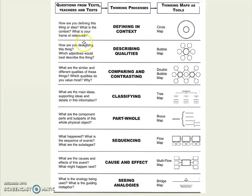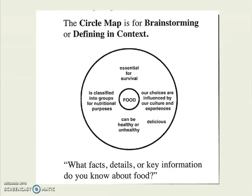So those are the eight thinking maps that we want you to put in a lesson plan. Let's go more in depth for each one. A circle map — all of these examples are going to be based around food because who can't relate to food? A circle map is all about vocabulary, prior knowledge, pre-writing, brainstorming, details of topics, and author's purpose. You could do any of those things with a circle map because you're just brainstorming everything you know about food.